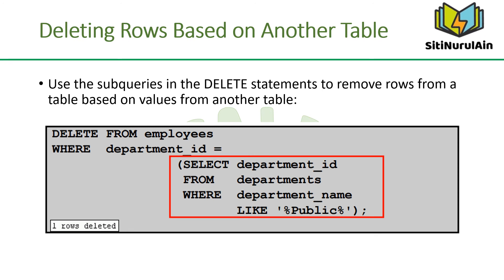You can use subqueries to delete rows from a table based on values from another table. The example in the slide deletes all employees in a department where the department name contains the string 'admin'. The subquery searches the departments table to find the department number based on the department name containing the string 'public', then feeds the department number to the main query, which deletes rows from the employees table based on this department number.